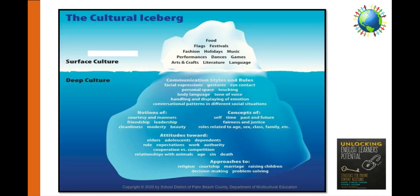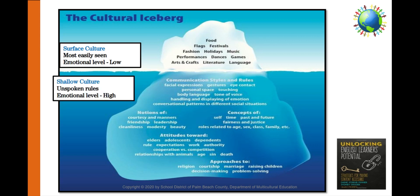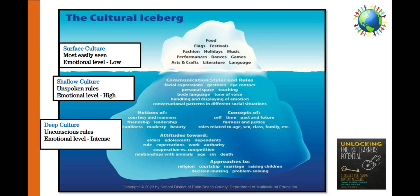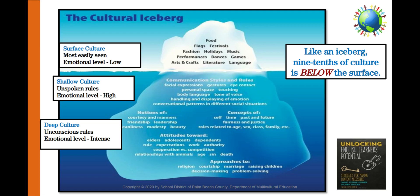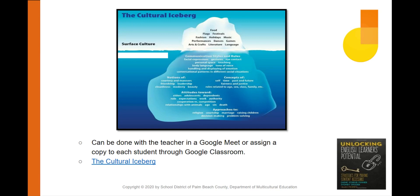This research shows the different layers of culture: the surface culture, the shallow culture, and the deep culture. Take a moment to see the different characteristics of culture for each layer. Like an iceberg, nine-tenths of culture is below the surface. You can bring this cultural iceberg activity live using Jamboard. This card sort activity can be done while the teacher leads it in a Google Meet, or you can assign a copy to each of your students through Google Classroom.